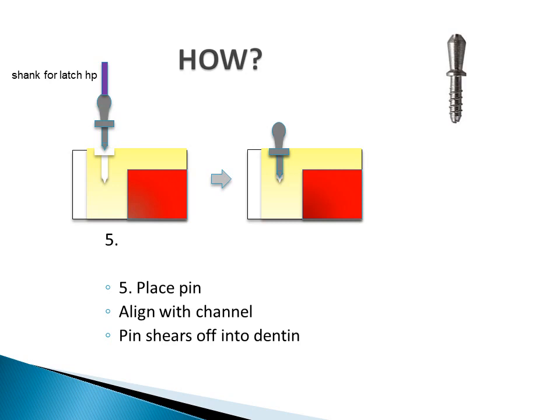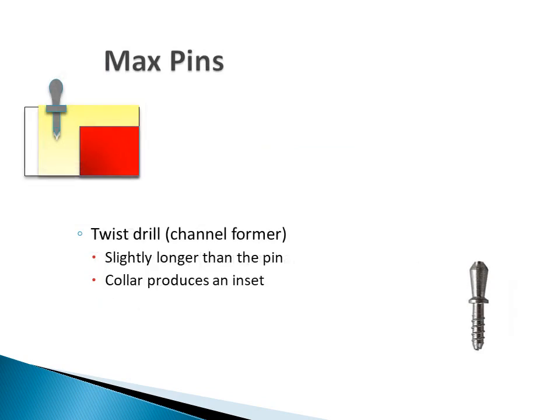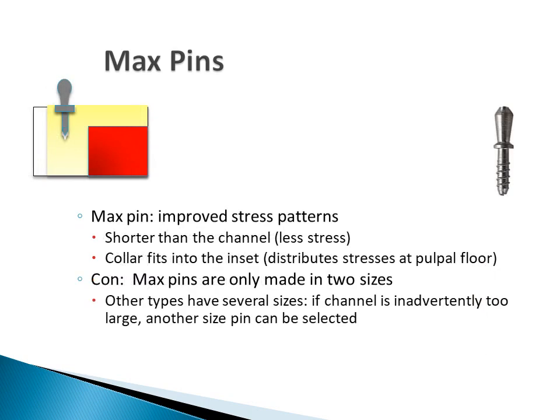This is performed using a slow speed latch handpiece. The Max pin is a titanium alloy. The twist drill, or channel former, is slightly longer than the pin. The collar produces an inset. The Max pin is shorter than the channel and the collar of the pin fits into the collar of the channel. Both of these features are advantageous and decrease the stress in the dentin. The downside to the Max pin is that there are only two sizes. If the channel is too large and you are using a small size pin, you can use the larger size pin. However, if you are using a large pin and the channel is oversized, you will either need to cement the pin or find another location for pin placement.